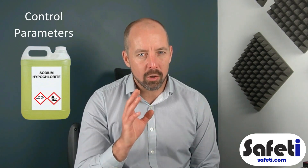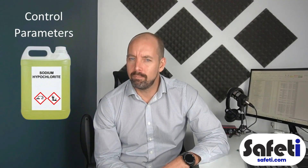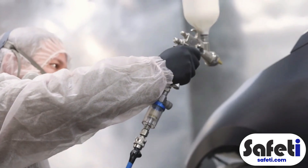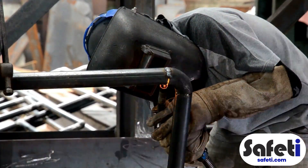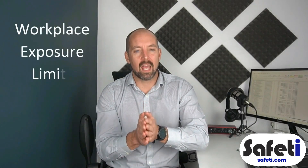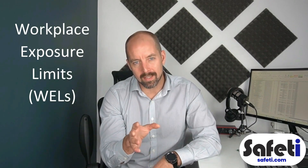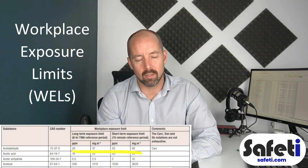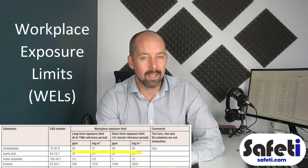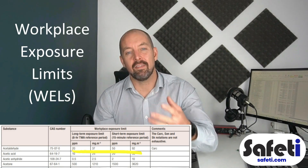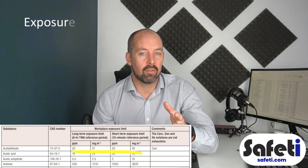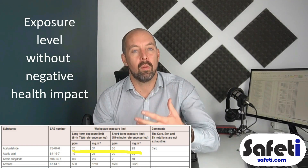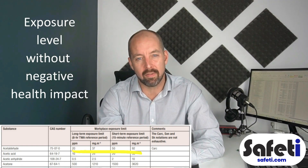The first subsection looks at control parameters. What this first section should provide us with is to let us know if there are any exposure limits for any of the harmful ingredients within the product. Many of our hazardous substances will be assigned with workplace exposure limits, or WELs. This is where a material has been identified as a significant health hazard and the relevant authorities have assigned and tested how much the human body can tolerate without a negative health impact.